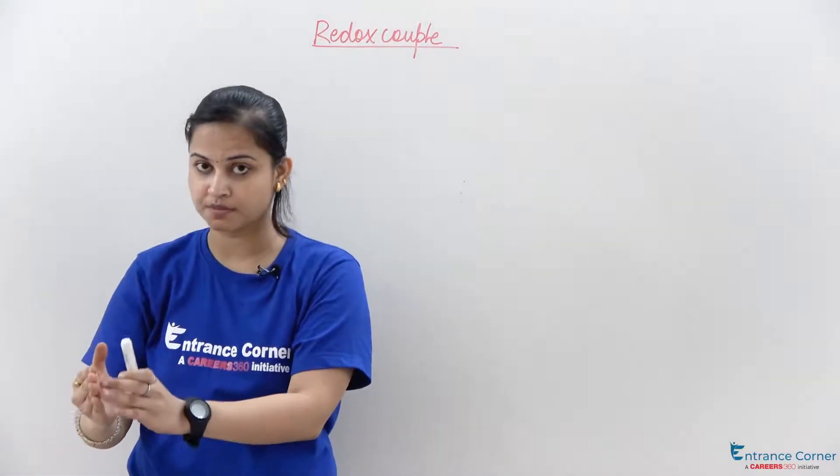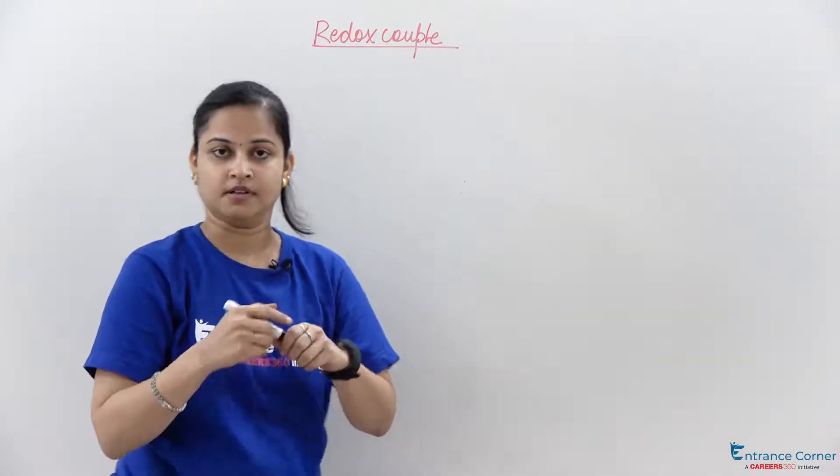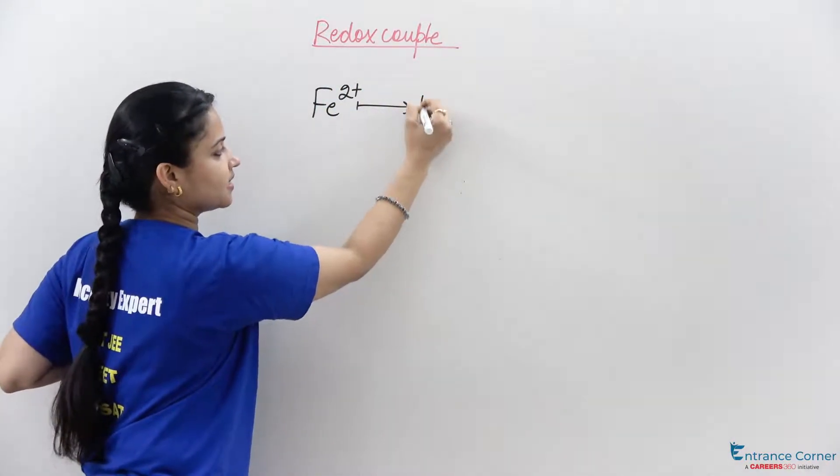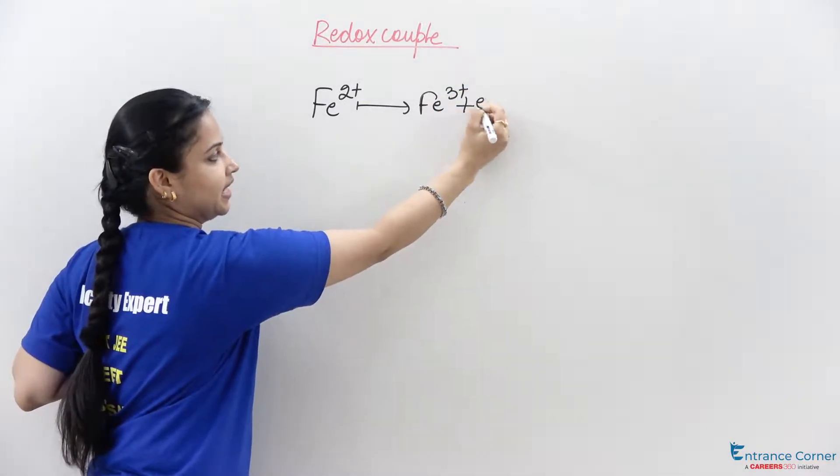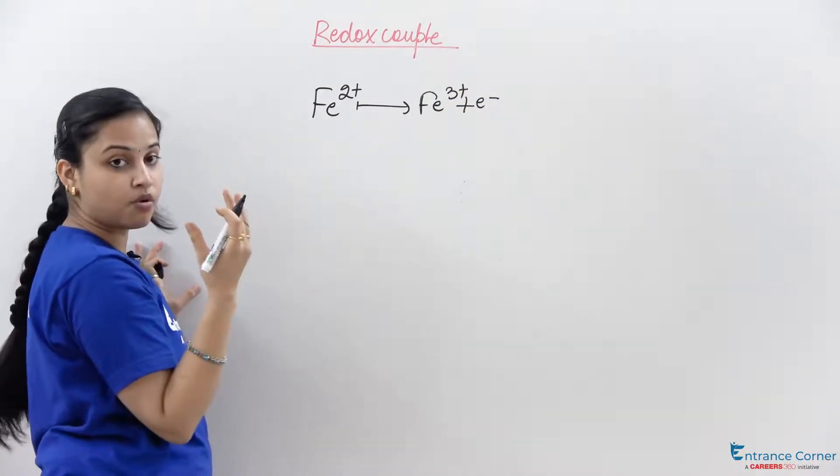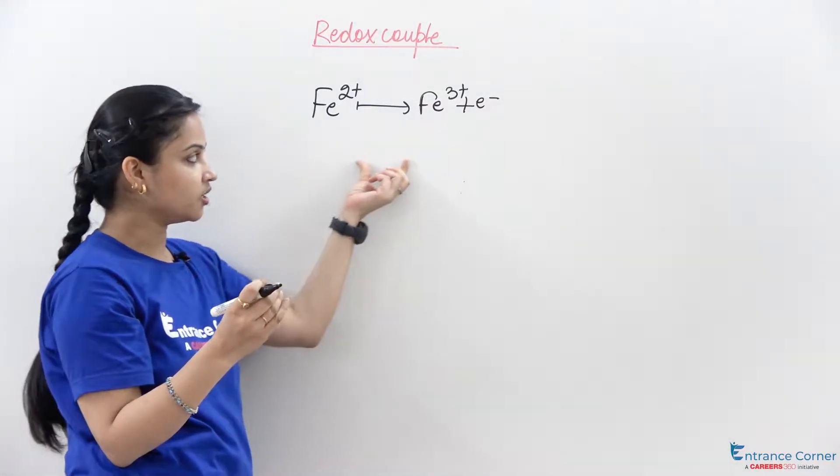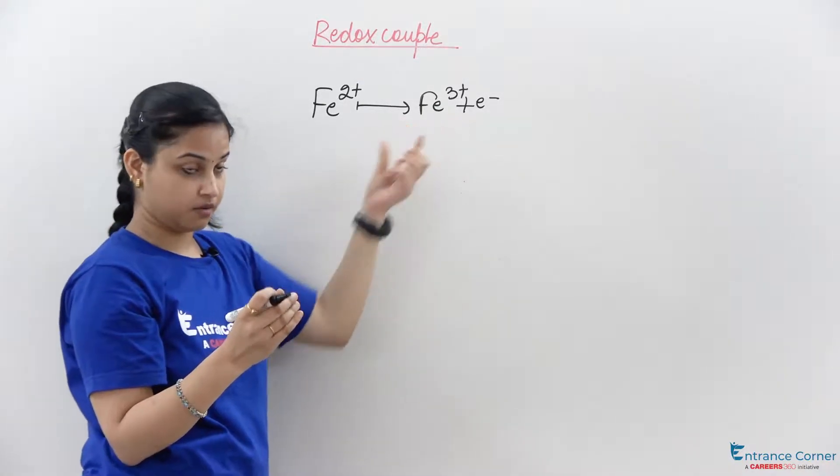For example, Fe2+ gets oxidized into Fe3+ plus an electron. So Fe2+ gets oxidized to Fe3+.